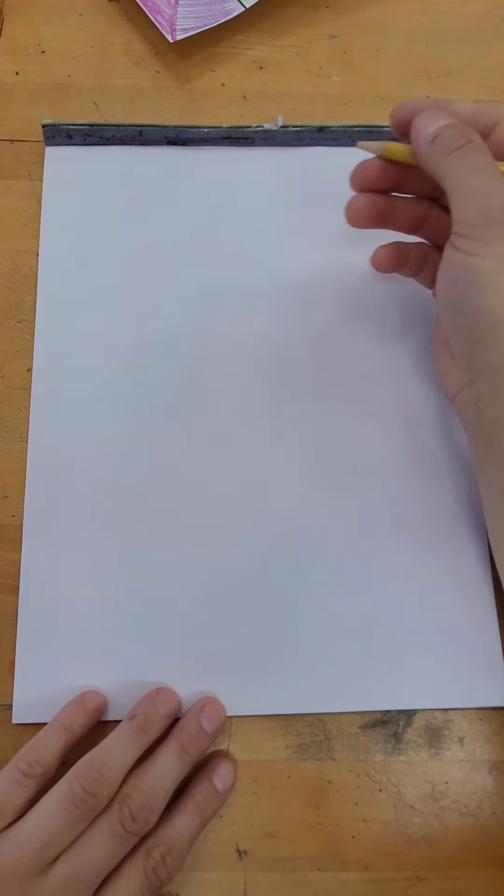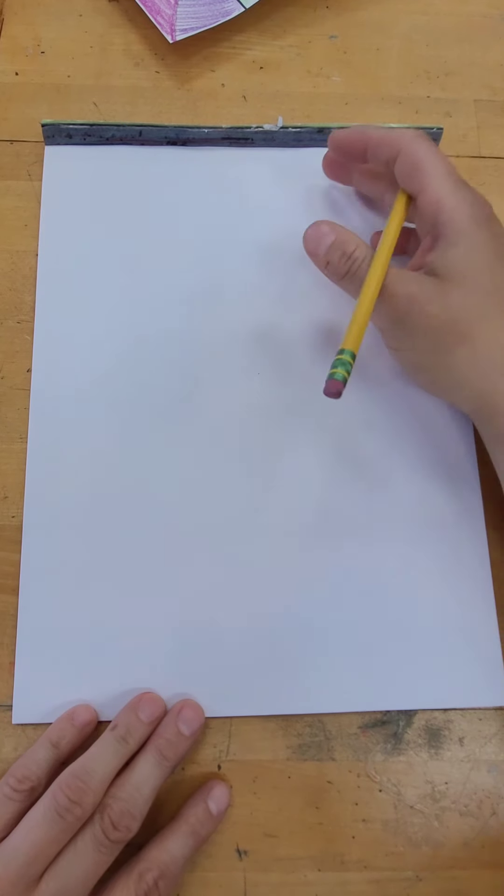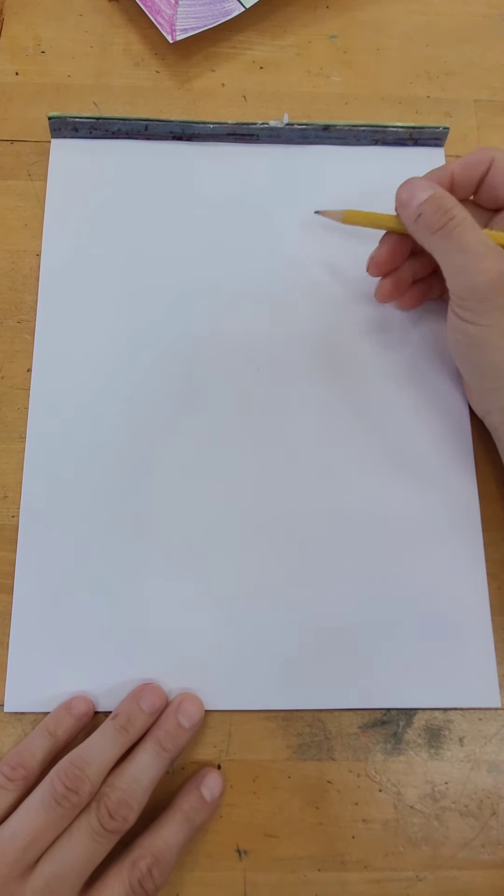Hello everyone, today we're going to be making some Paul Klee cats. Who was Paul Klee? He was an abstract expressionist who created artworks using very simple forms, simple shapes, and simple colors. So let's begin. We're going to be drawing our cat. We're going to have our paper up and down so we have the most amount of space.